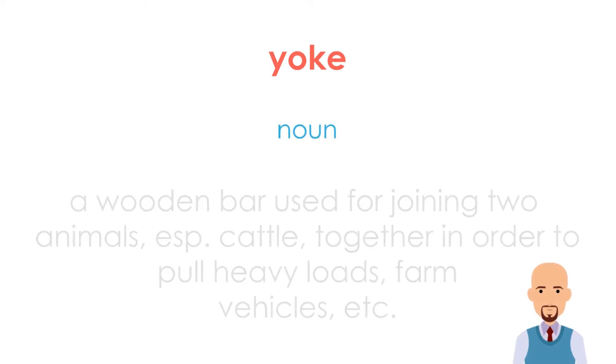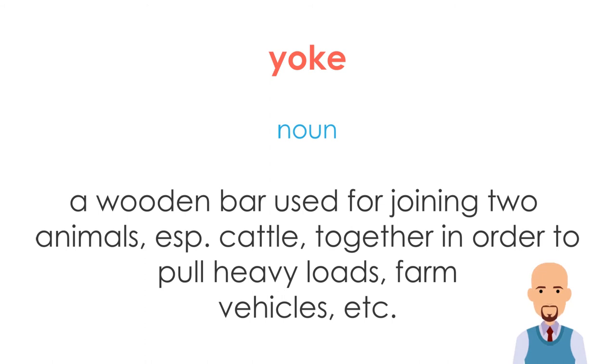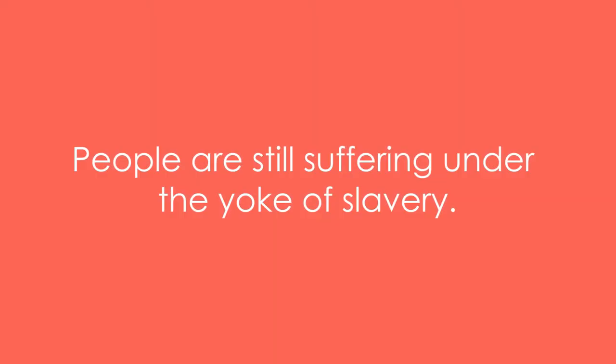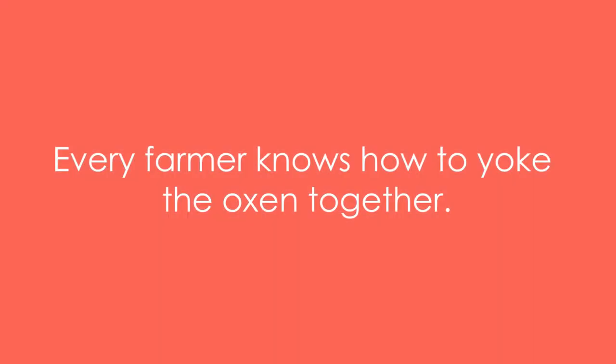Yoke means a wooden bar used for joining two animals, especially cattle, together in order to pull heavy loads, farm vehicles, et cetera. Example one: People are still suffering under the yoke of slavery. Example two: Every farmer knows how to yoke the oxen together.